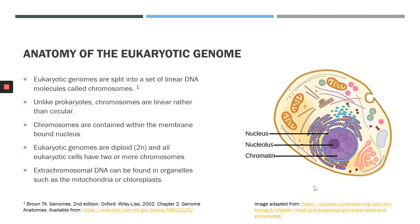Unlike the prokaryotic genome, the eukaryotic genome is separated from other cytoplasmic components within the cell through this membrane-bound organelle, or the nuclear membrane. Eukaryotic cells are also diploid. All eukaryotic cells besides gametic cells are diploid, which means that they have two copies of each chromatid within their genomes.